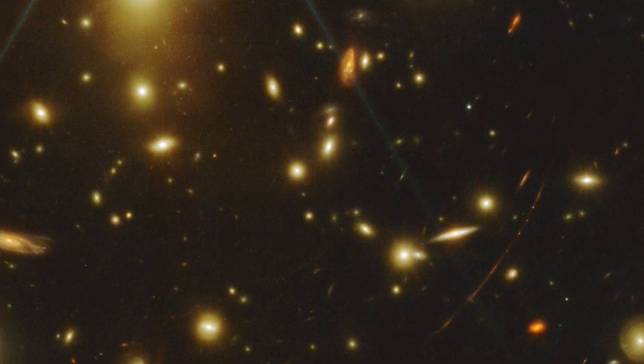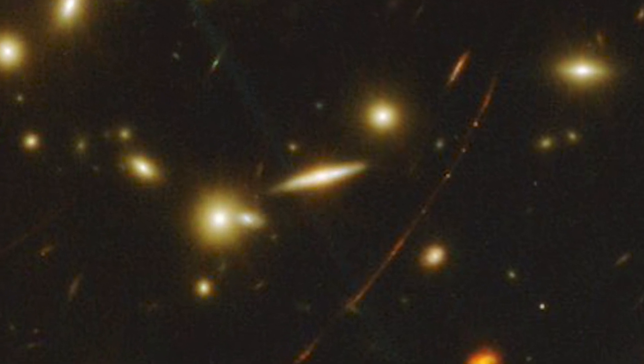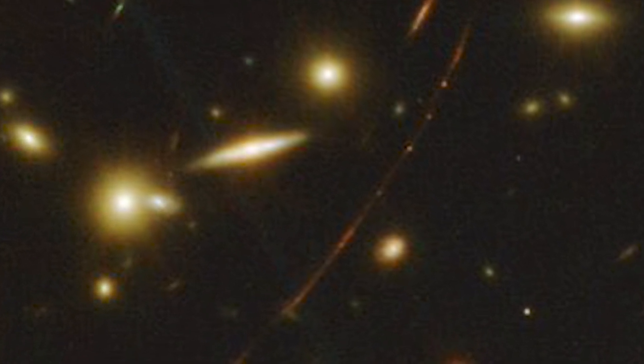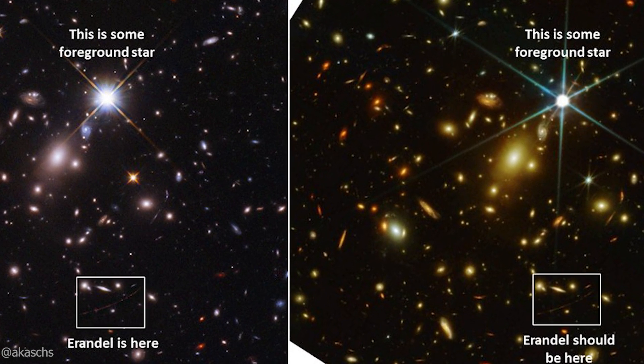We can normally see complete galaxies at such great distances, but a fortunate chance allowed astronomers to see this star, dubbed Erindel, using the Hubble Space Telescope and then viewed it again with the JWST on July 30.